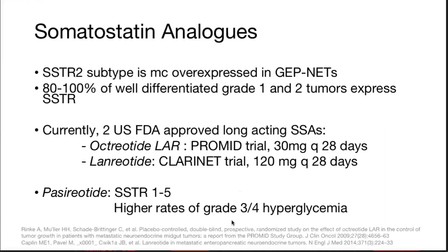For medical management — the most common type of SSTR receptor is SSTR type 2. In cases of well-differentiated grade 1 and grade 2 tumors, nearly 100% express SSTR. There are two US FDA-approved somatostatin analogues: octreotide LAR — based on the PROMID trial — 30 mg subcutaneous every 28 days, and lanreotide — based on the CLARINET trial — 120 mg every 28 days.